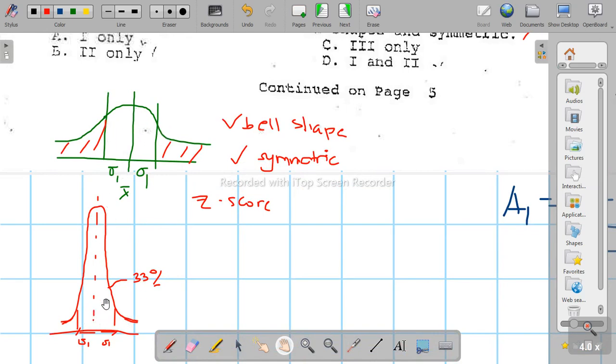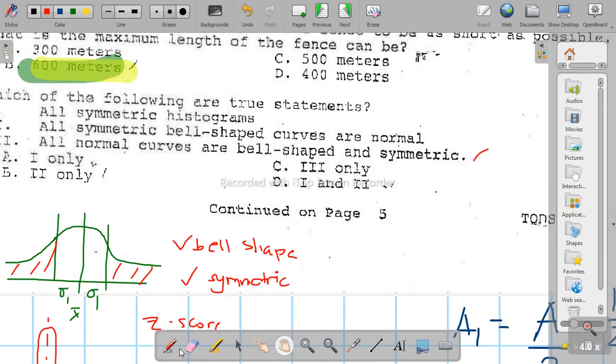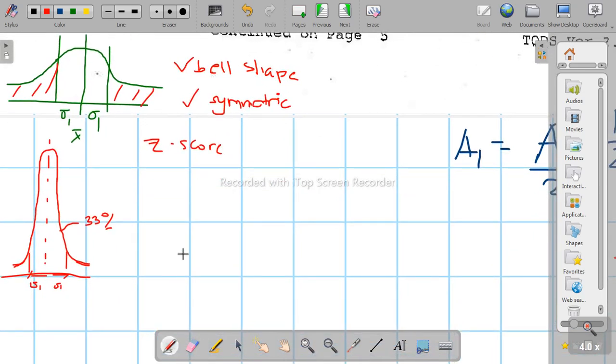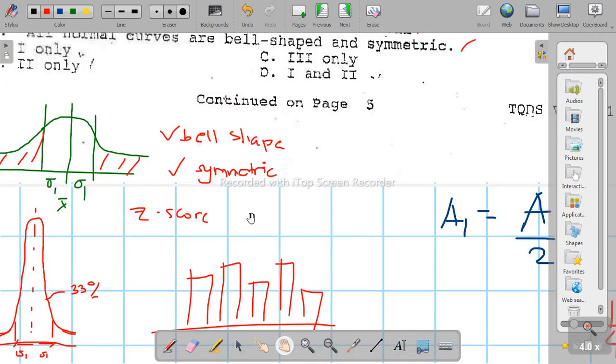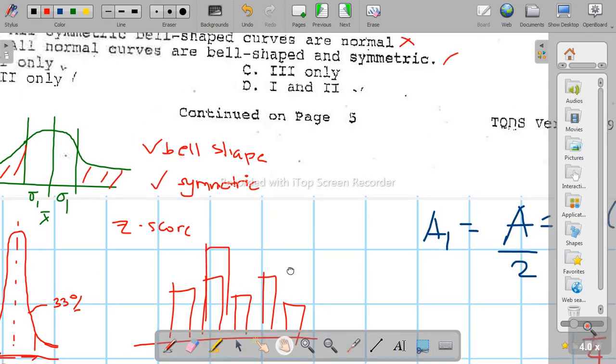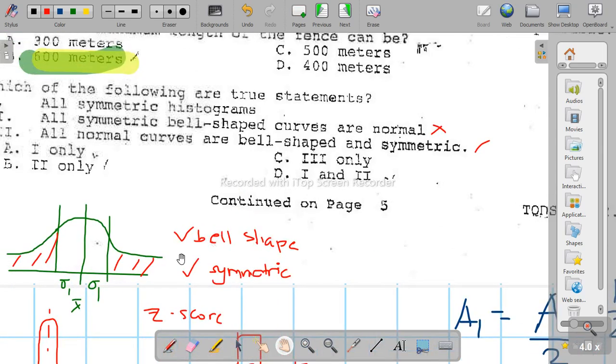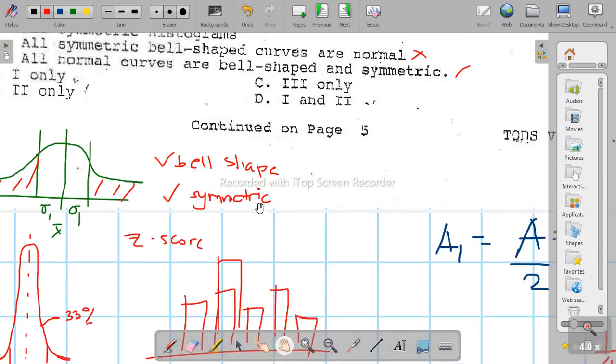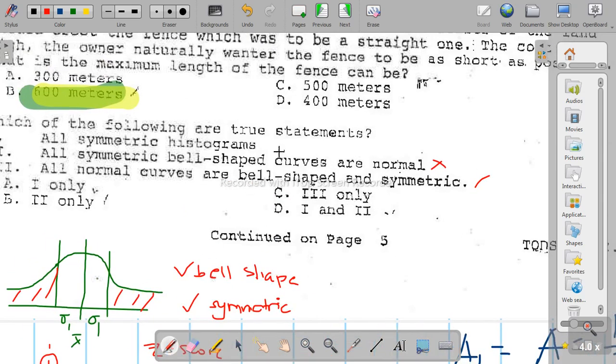Now, are all symmetric bell shapes normally distributed? You could have a longer bell shape that's still symmetric. The area under this curve at one standard deviation wouldn't be approximately 33%. So not all bell-shaped symmetric curves are normally distributed. The answer is number 3.